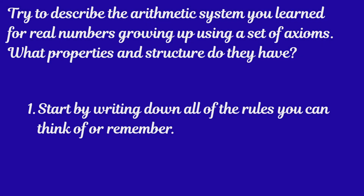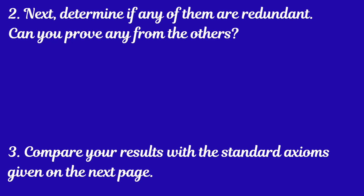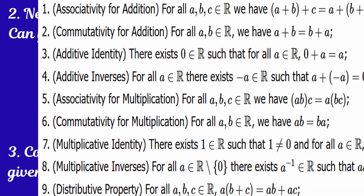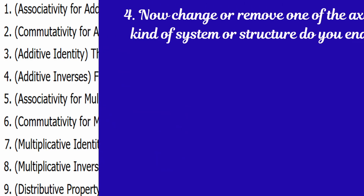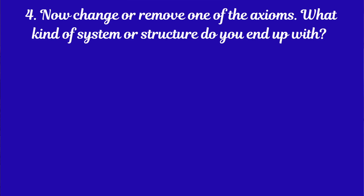Make sure to hit that subscribe button on your way out. Let's end with some exercises you can try at home. Try to describe the arithmetic system you learned for real numbers growing up using a set of axioms. What properties and structures do they have? Start by writing down all the rules you can think of or remember. Next, determine if any of them are redundant — can you prove any from the others? Compare your results with the standard axioms for the real numbers. Then change or remove one of the axioms. What kind of system do you end up with? Leave your answers in the comments or bring them to the next video. Let's build this channel together.